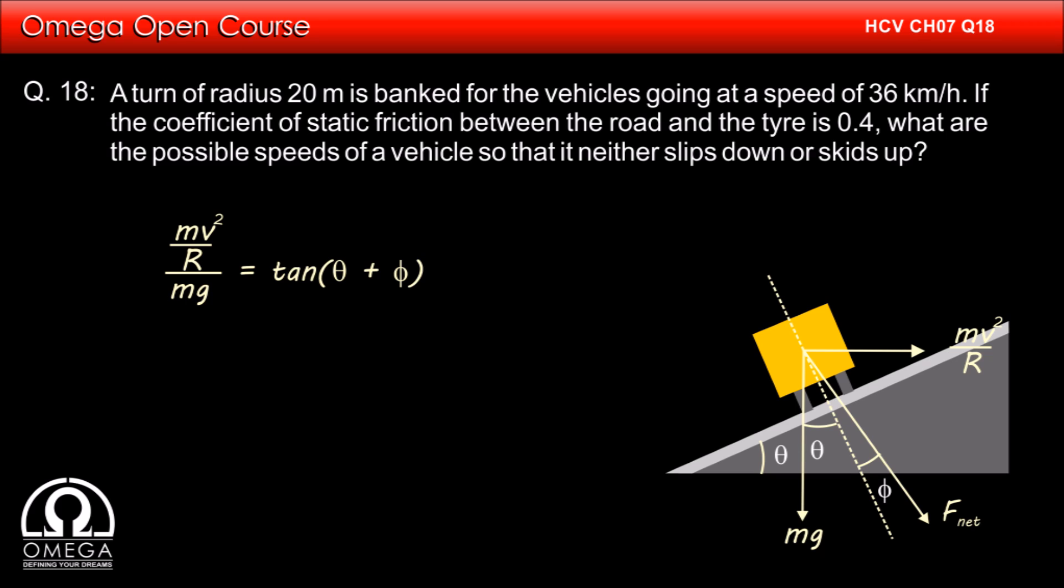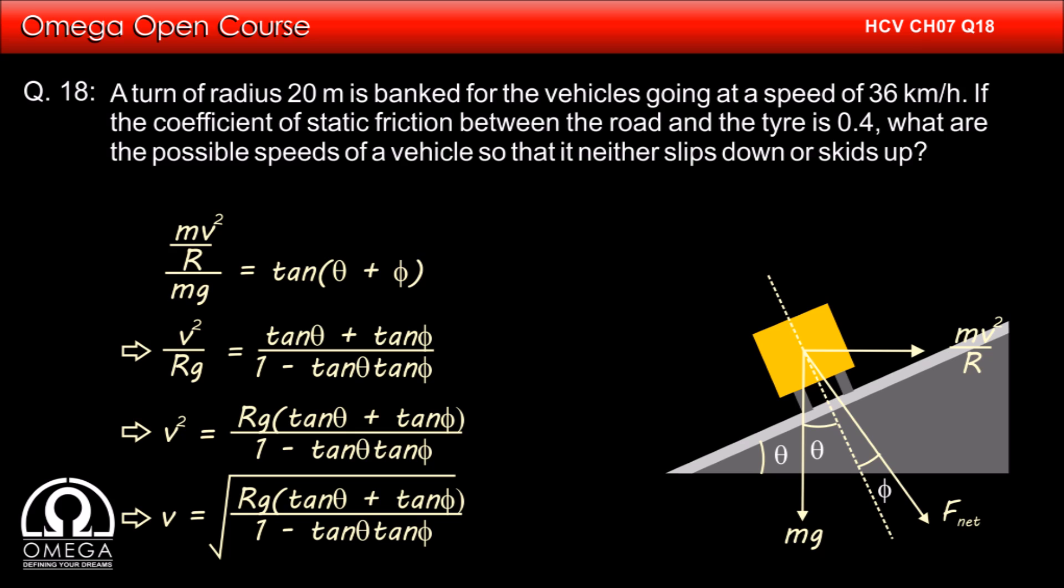Or V square by RG is equal to tan theta plus tan phi divided by 1 minus tan theta tan phi which implies V square is equal to RG tan theta plus tan phi divided by 1 minus tan theta tan phi or V is equal to root under RG into tan theta plus tan phi divided by 1 minus tan theta tan phi.